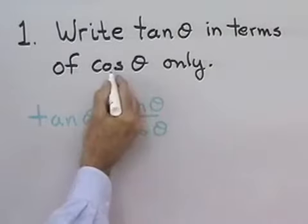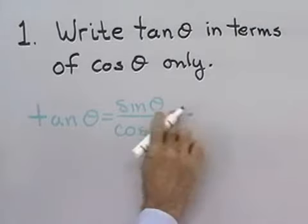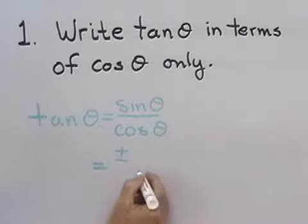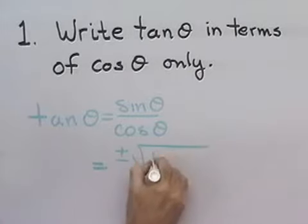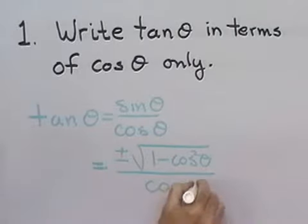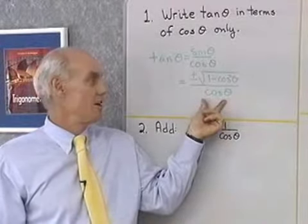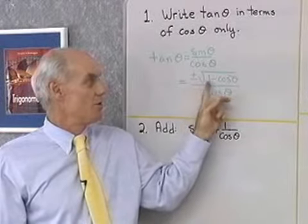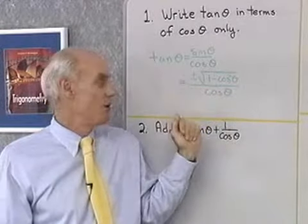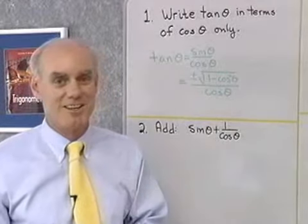I want to get everything in terms of cosine theta only, so I'm going to change sine theta into an expression that involves only cosine. Using the Pythagorean identity, sine theta is plus or minus the square root of 1 minus cosine squared theta, all divided by cosine theta. So tangent theta equals plus or minus the square root of 1 minus cosine squared theta, all divided by cosine theta — an expression involving only cosine theta.